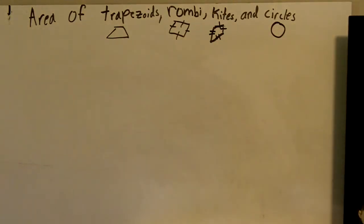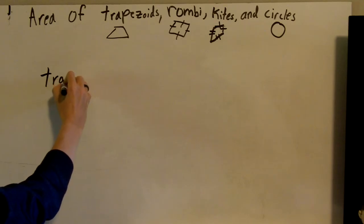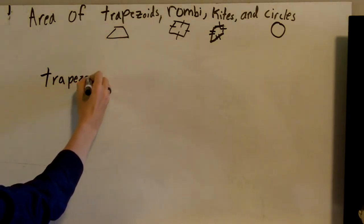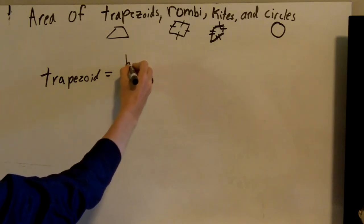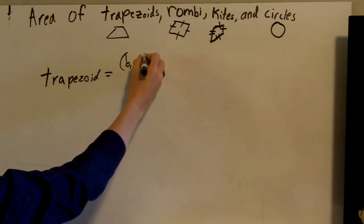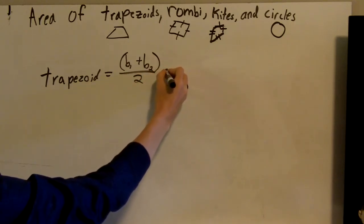I'm going to go through the formulas of all four and then we'll do a couple examples of each. So a trapezoid is base one, or the bottom base, plus the top base, base two, divided by two, times height.